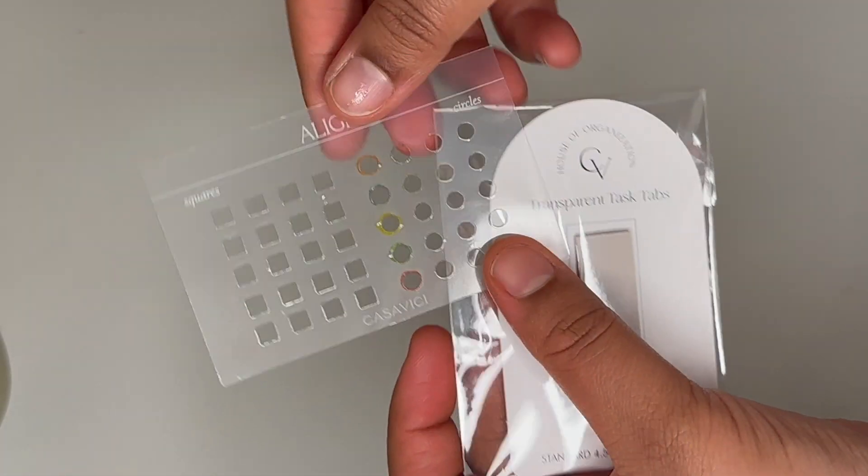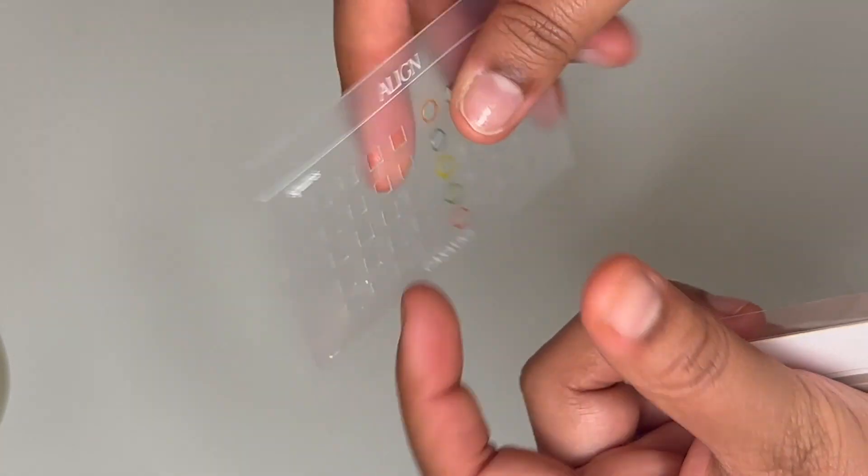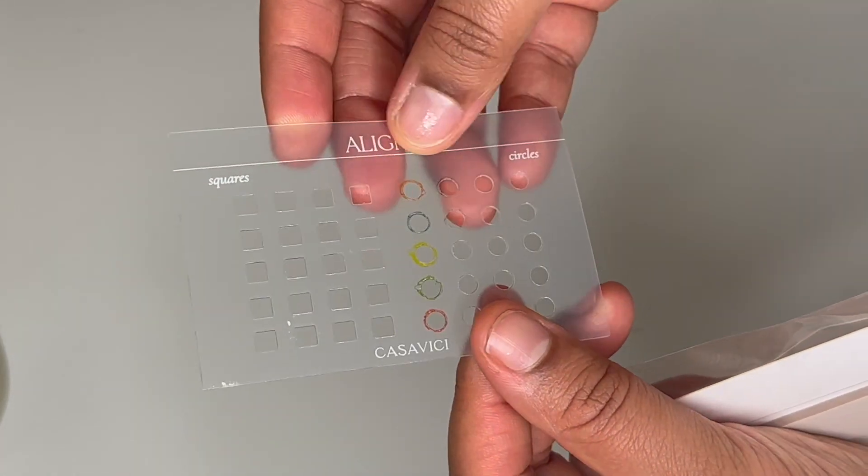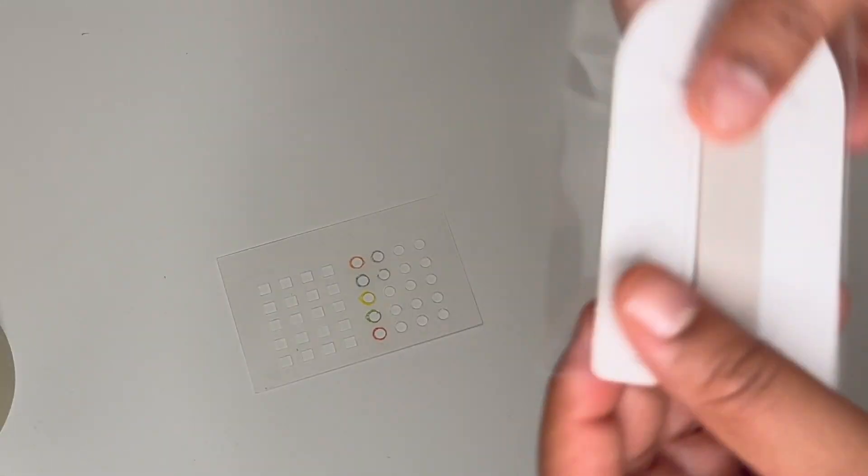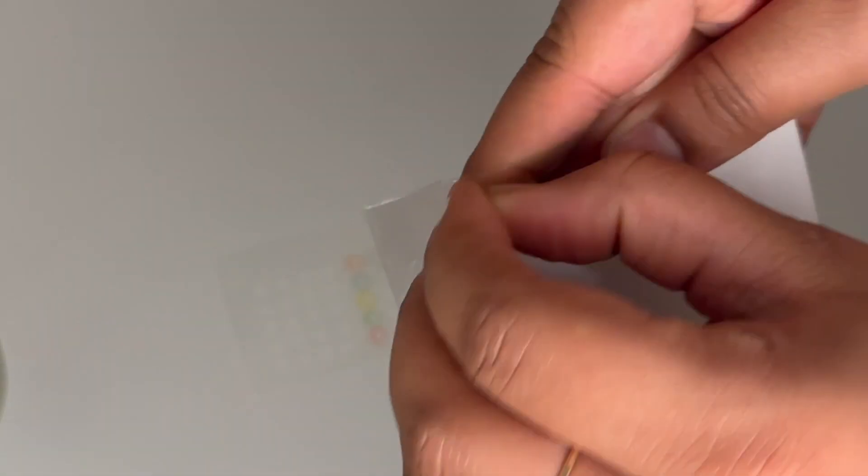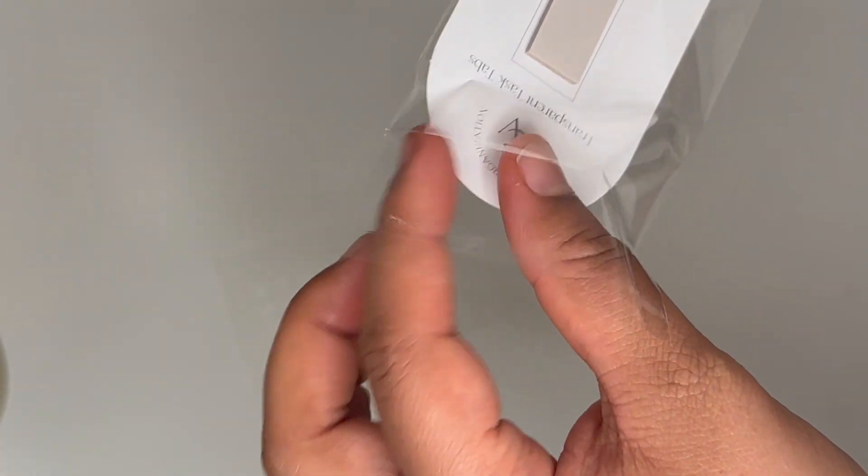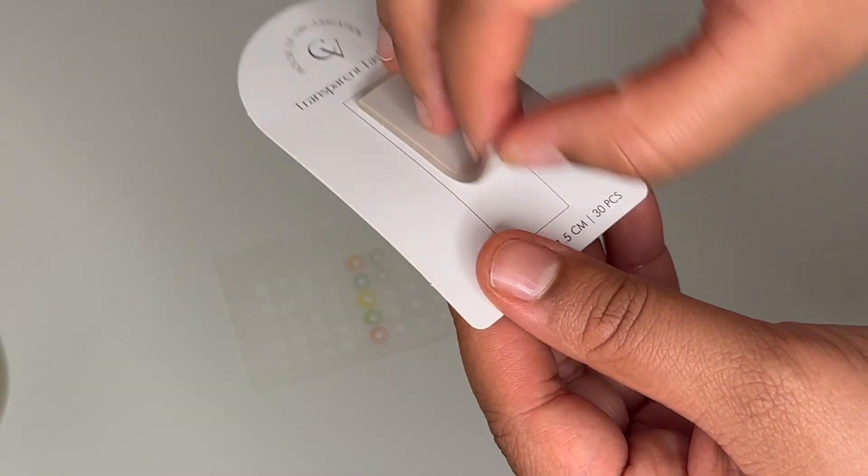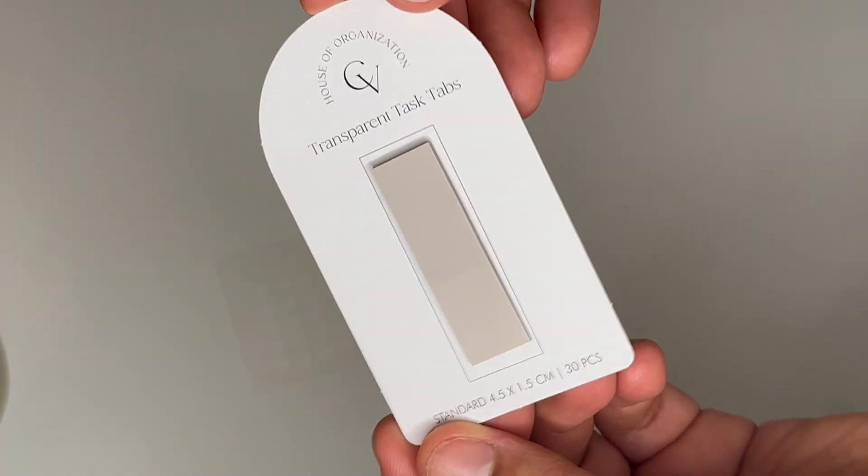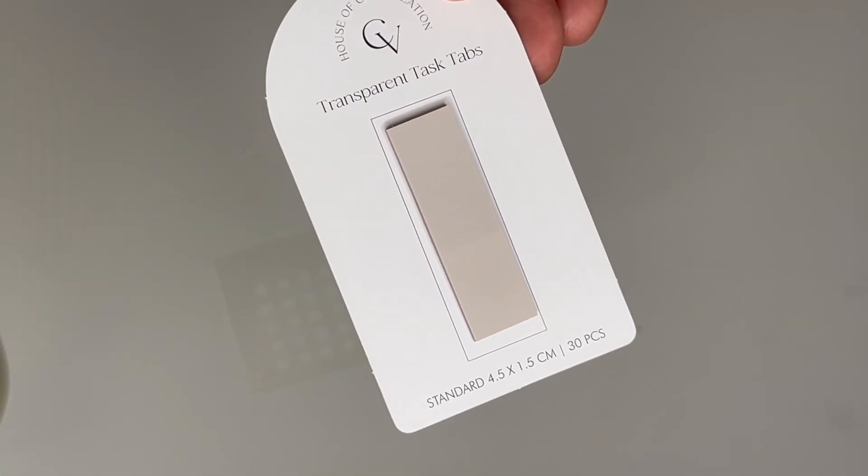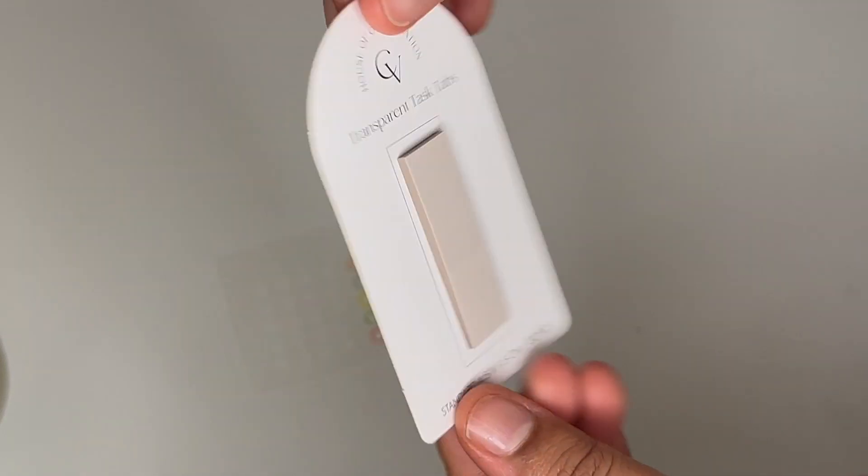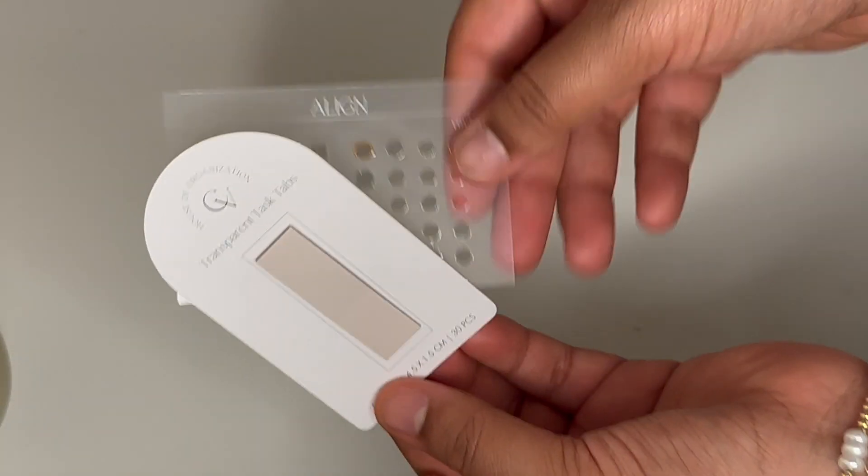The next thing that I got was from CasaVici. I got these align square and circle templates which are really awesome and very useful, as you can see I've been using them. I also got these transparent task card tabs, these are so cute. These are in this really nice beige gray color, I love this color so much. A lot of my things are going to be like this mocha gray beige color and these are going to be used for grading task cards.